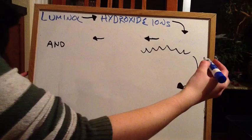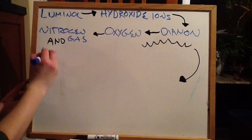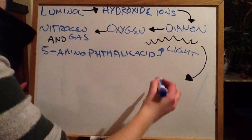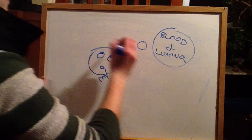Luminol reacts with hydroxide ions, which forms d-anon, and reacts with oxygen, forming nitrogen gas and 5-aminophthalic acid. The excited electrons relax, producing light, making the lamp glow. So what's really happening when we mix the blood and the luminol?